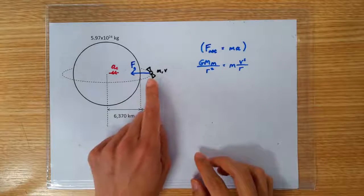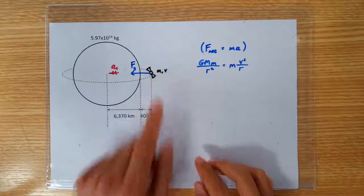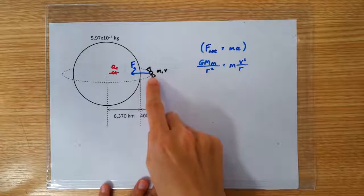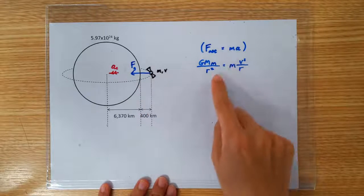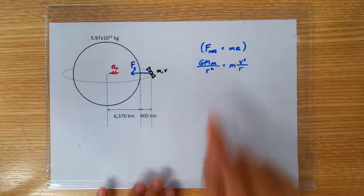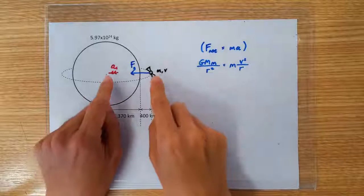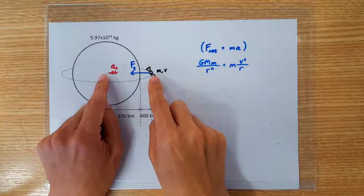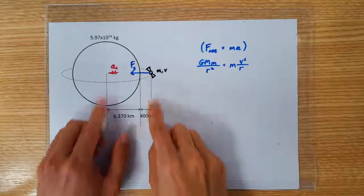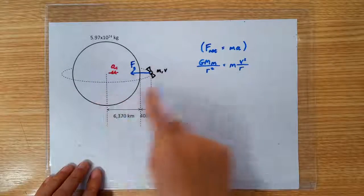We now apply Newton's second law on the satellite. So there's only one force acting on the satellite. Therefore, the net force is GMm over r squared. What we need in the denominator is the center-to-center distance between the Earth and the satellite, which turns out to be the radius of the circular orbit.